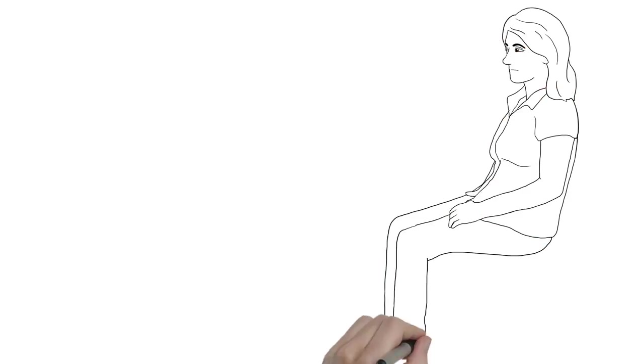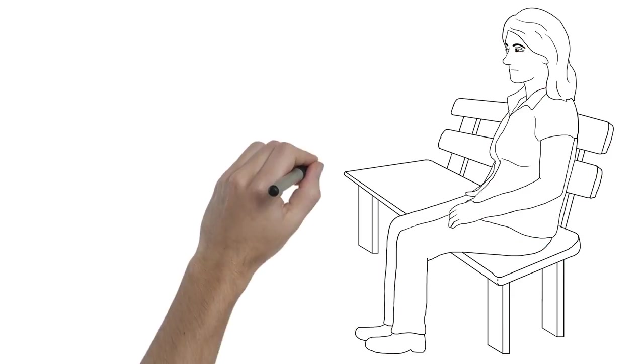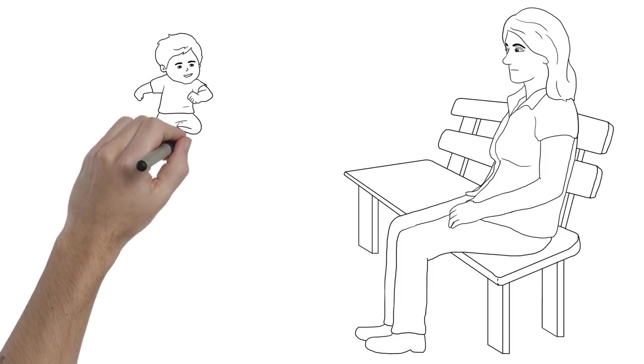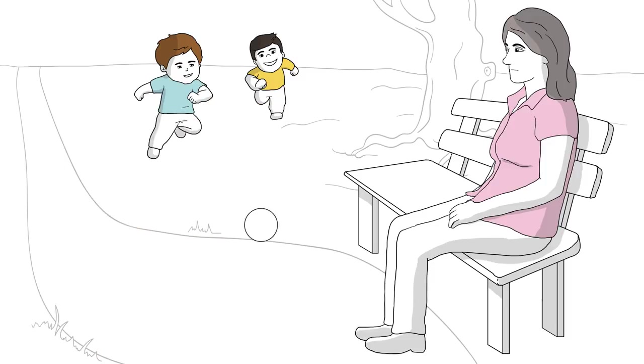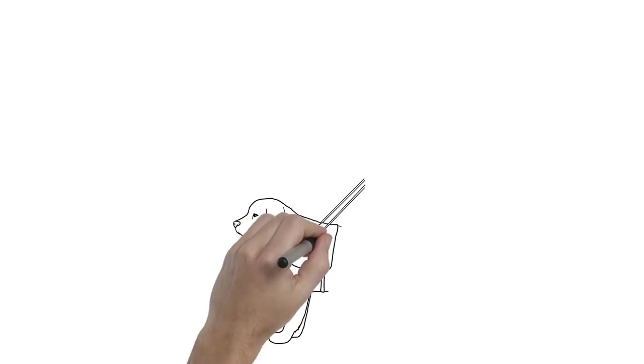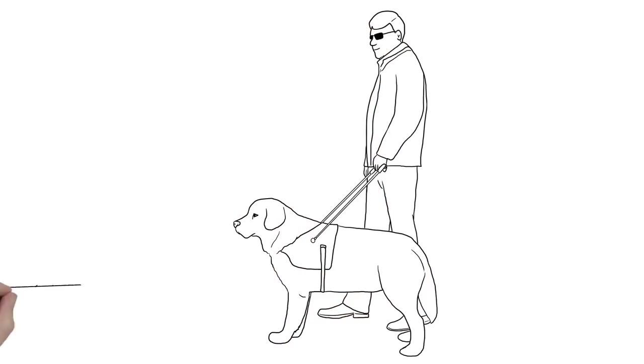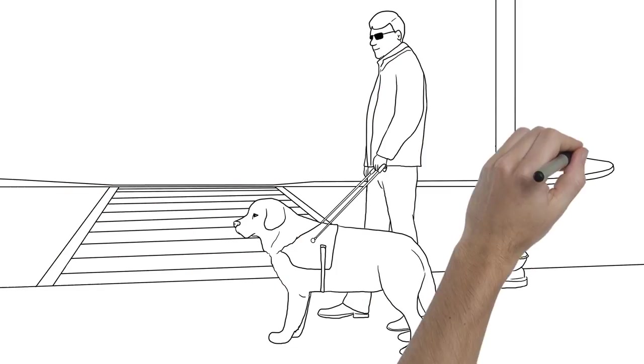Leah suffers from severe situational anxiety disorder, and her therapist suggests that she get an emotional support animal to help her feel more comfortable at home and while flying. Most of us have seen animals wearing vests that indicate they are more than just a pet.